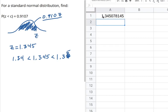So the z-score is 1.345 almost exactly just with some extra decimal places of accuracy.